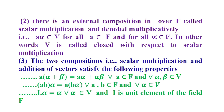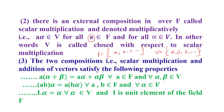There is an external composition in V over F called scalar multiplication, denoted by multiplication. For example, a belongs to F and alpha belongs to V — where F is a set of scalars such as {a, b, c, ...} and V is a set of vectors such as {alpha, beta, gamma, ...}. So for all a in F and alpha in V, a·alpha belongs to V; in other words, V is closed with respect to scalar multiplication.